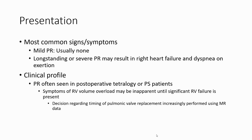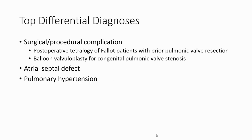Common signs and symptoms: mild pulmonary regurgitation is usually asymptomatic. Long-standing or severe pulmonary regurgitation may result in right heart failure. Pulmonary regurgitation is often seen in post-operative tetralogy of Fallot or pulmonary stenosis patients. Symptoms may include significant right heart failure when cardiac failure is greater.